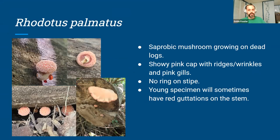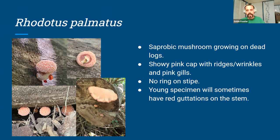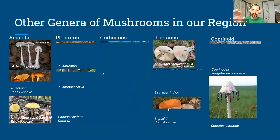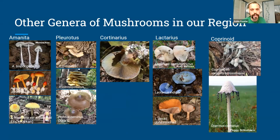I recently noticed a species I had never seen before: Rhodotus palmatus. It's a saprophytic mushroom growing on dead logs. It has a showy pink cap with ridges and wrinkles, and pinkish gills. It has no ring on the stipe. Young specimens will sometimes have red secretions on the stem, which may just be a metabolic fluid that comes out of the mushroom. Here's an older specimen where you can see how the wrinkles and ridges on the cap start to fade out as it ages.